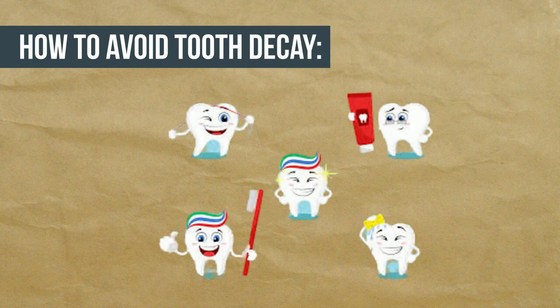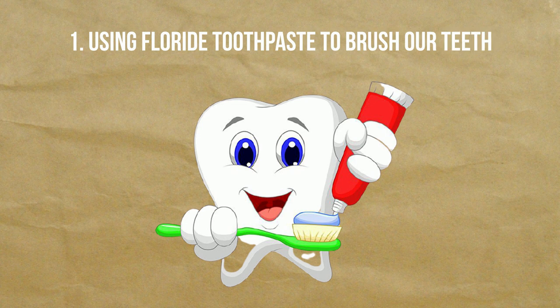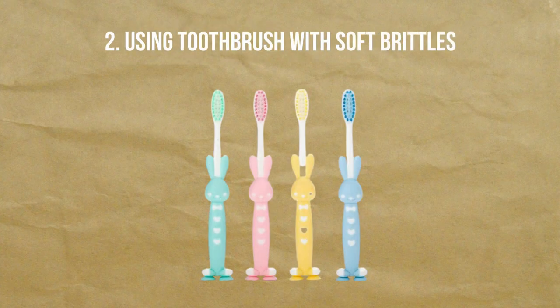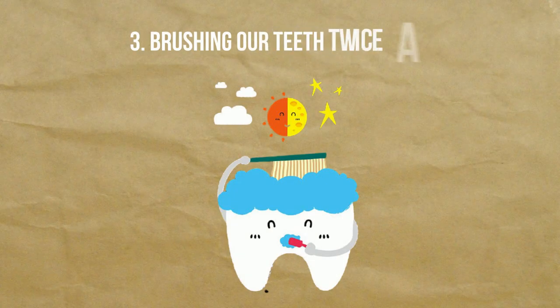Through proper maintenance and cleanliness, we can avoid tooth decay. For instance: use fluoride toothpaste to brush your teeth; use a toothbrush with soft bristles; and brush your teeth twice a day — once before bed and once after waking up in the morning.